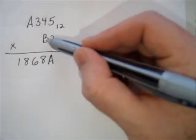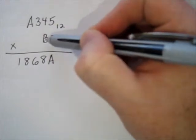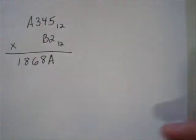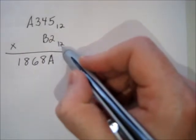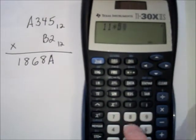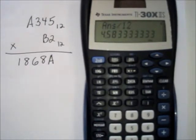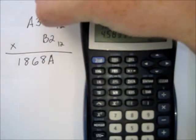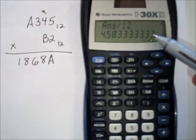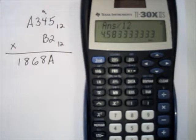Now we move to the digit B, which is eleven. B times five is eleven times five, which is 55. We need to figure out how many twelves go into 55. You can use a calculator here — divide by twelve and get four-point-something. So the four is what we carry, and for the remainder: four times twelve is forty-eight, and fifty-five minus forty-eight is seven.